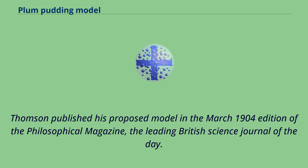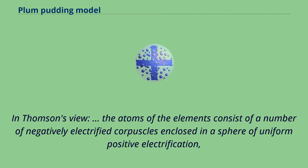Thomson published his proposed model in the March 1904 edition of the Philosophical Magazine, the leading British science journal of the day. In Thomson's view, the atoms of the elements consist of a number of negatively electrified corpuscles enclosed in a sphere of uniform positive electrification.